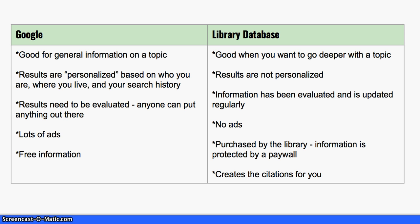You can trust all of the information that you find from a library database. There are no ads in a library database, as there are when you pull up websites from Google. Google's great because it's free — free information for everyone. A library database is very expensive; it's purchased by a library. And so therefore, that information is protected by something called a paywall, which doesn't allow us to view that information from a Google search. We have to get access directly to the library database to get to that information.